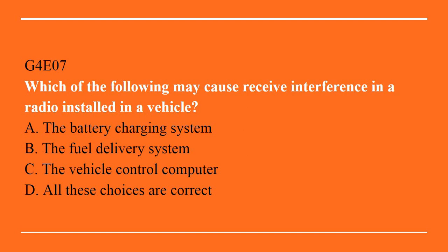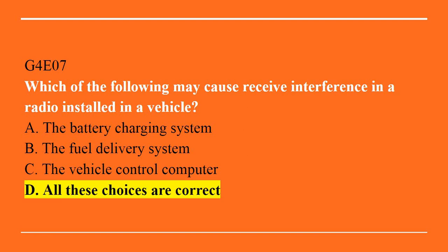G4E07: Which of the following may cause receive interference in a radio installed in a vehicle? A. The battery charging system. B. The fuel delivery system. C. The vehicle control computer. Or D. All of these choices are correct. Correct answer is D. All of these choices are correct.